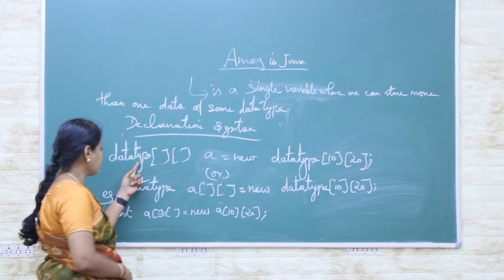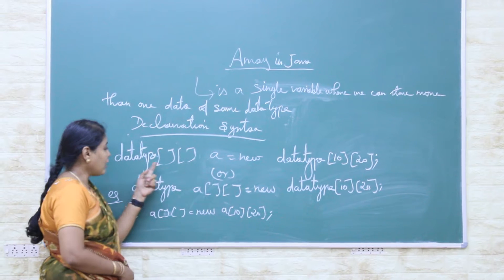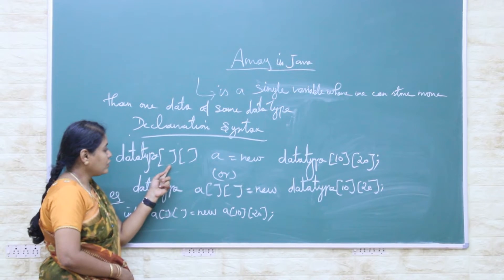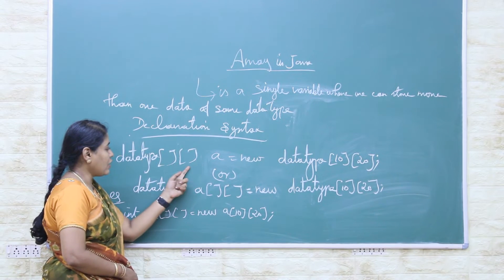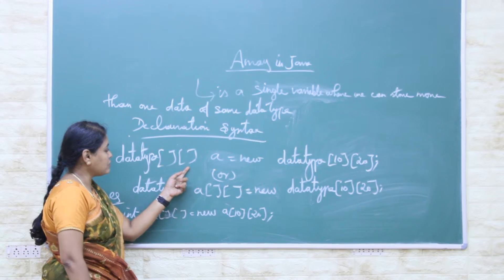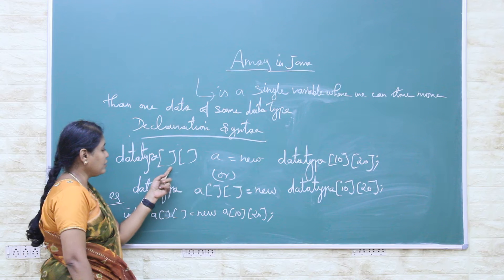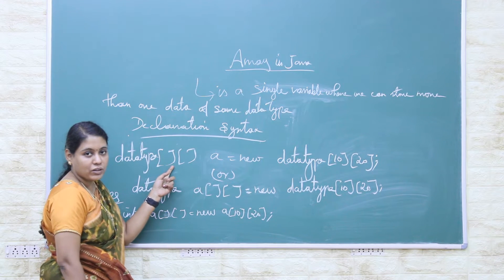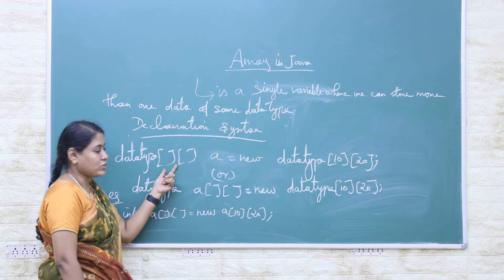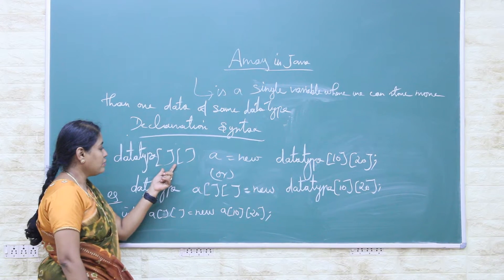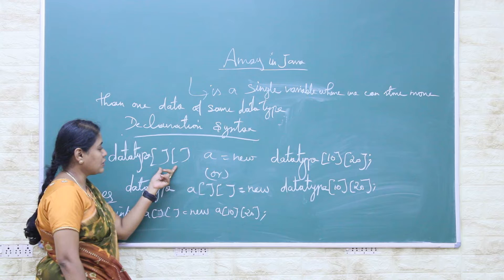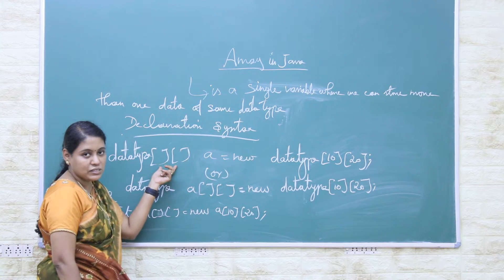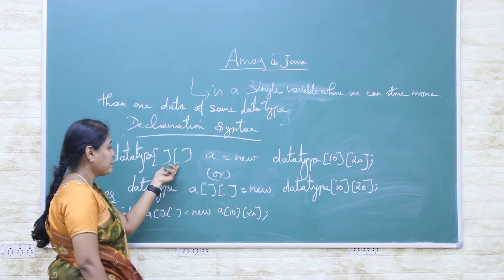This array also has a syntax to declare it. The syntax uses double subscripts. Each subscript must be written within open and closed square brackets. Here we are having two subscripts, which means this is a two-dimensional array.